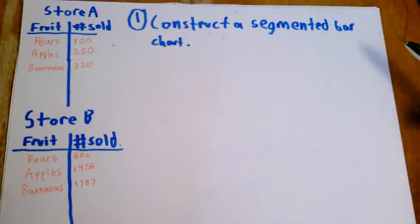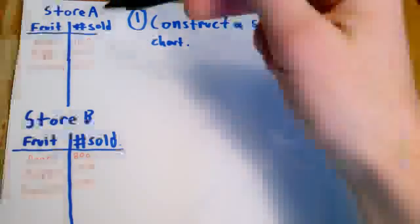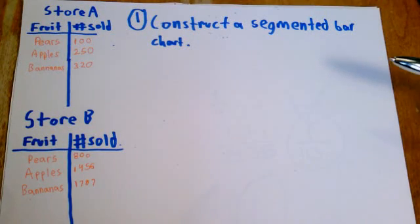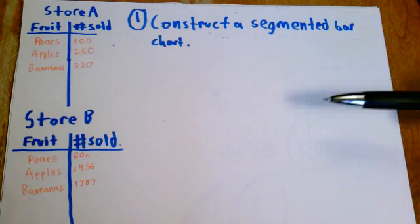Here we have two stores, Store A and Store B. Store A is a much smaller store, but both stores sell three fruits: pears, apples, and bananas. Store A sells a lot, Store B sells a lot more than Store A because of its larger size. But now, let's make a segmented bar chart to compare the relative proportions of fruit sold for both stores.